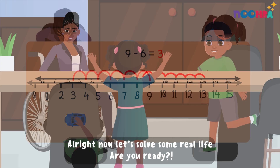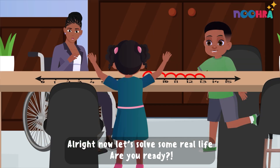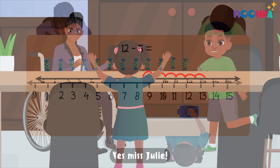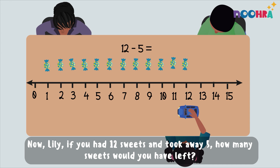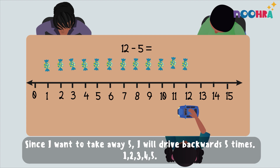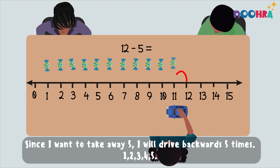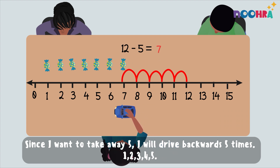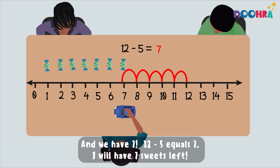Alright, now let's solve some real-life puzzles! Are you ready? Yes, Miss Julie! Now Lily, if you had 12 sweets and took away five, how many sweets would you have left? Since I want to take away five, I will drive backwards five times: one, two, three, four, five. And we have seven! Twelve minus five equals seven. I will have seven sweets left.